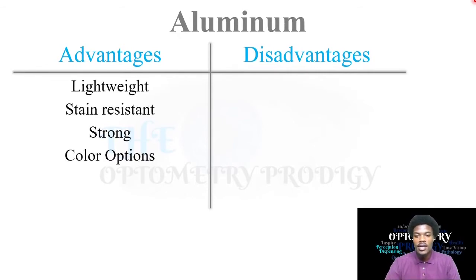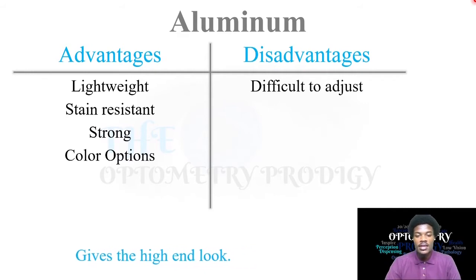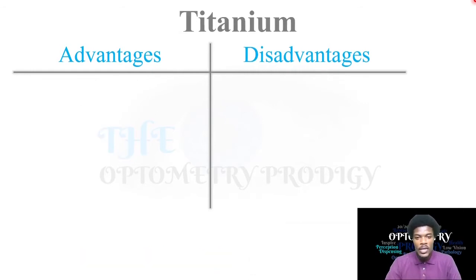Aluminum — the advantages are that it is lightweight, strain resistant, strong, and has various color options. However, it is difficult to adjust. The tip is that aluminum gives that high-end look — most styles in aluminum will give a high quality, high-end appearance.